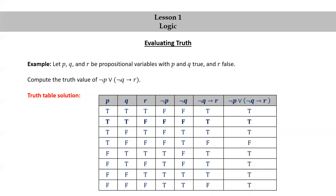We've now generated the entire truth table for the given compound statement. The second row corresponds to p and q being true and r being false, and we see that the result is T because that is what is in the final column of the second row.